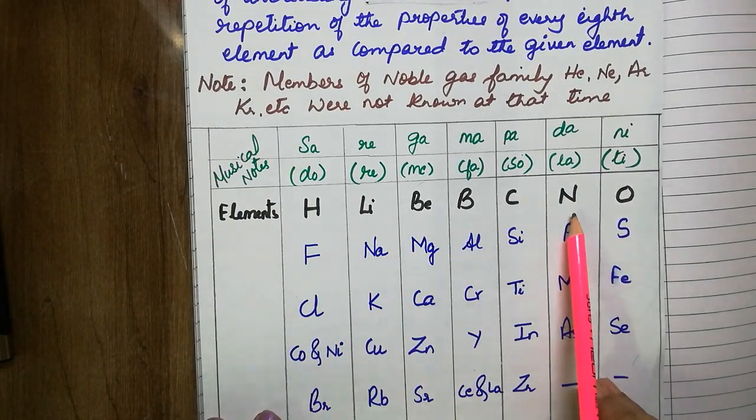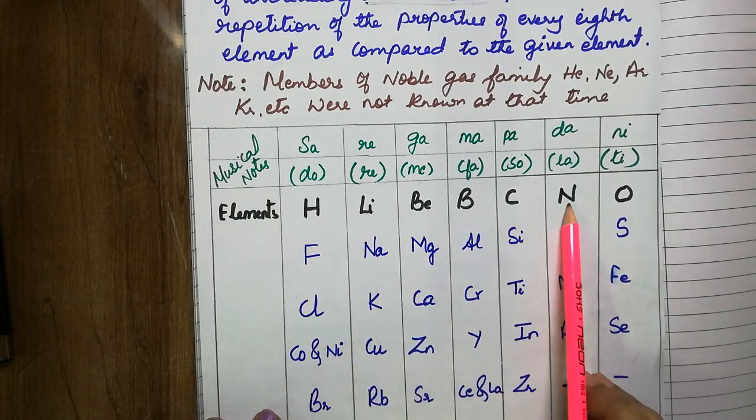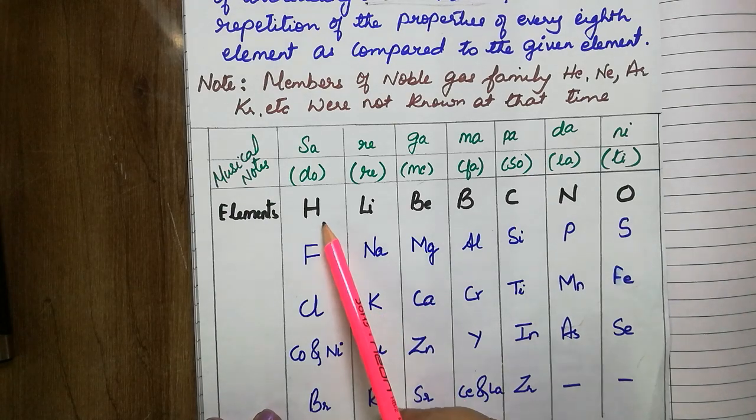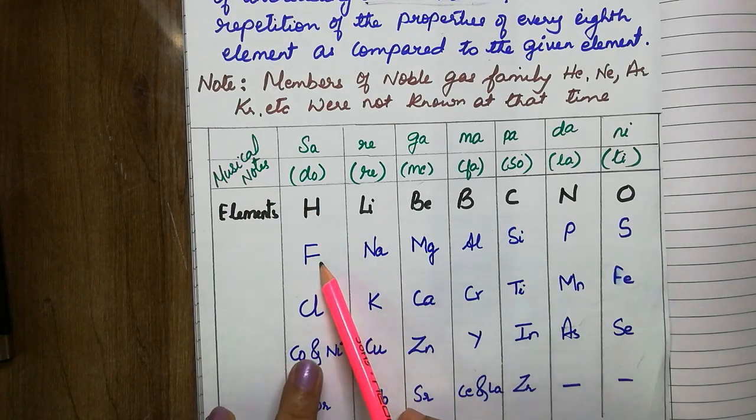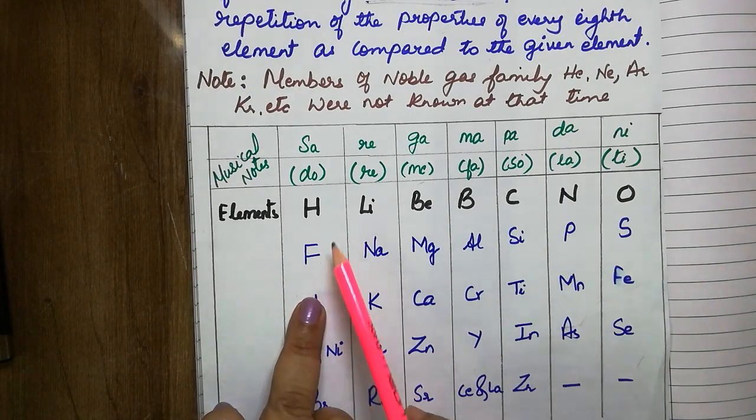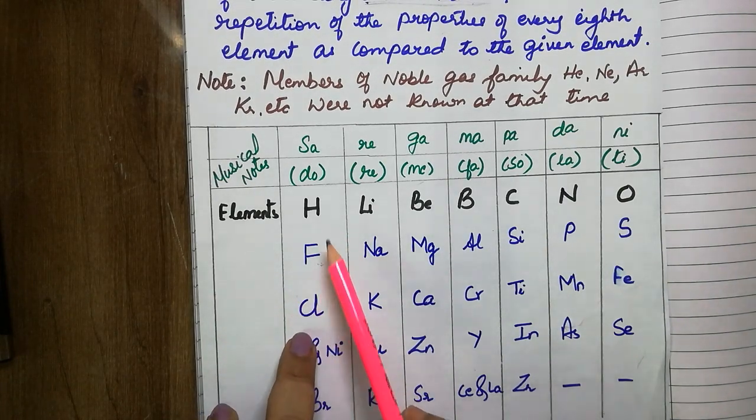Then he placed the 56 elements known at that time according to their increasing atomic masses. The element hydrogen, the first element, has properties similar to the next one, fluorine.